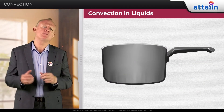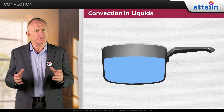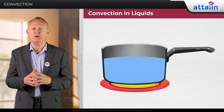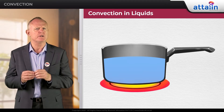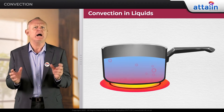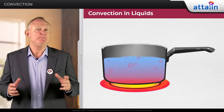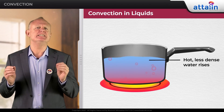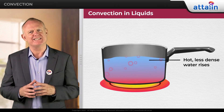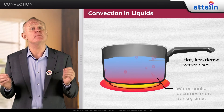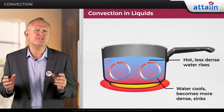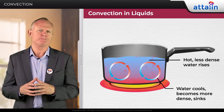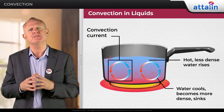Think of a pan filled with water with a heat source at the bottom. As the heat is transferred from the bottom of the pan to the liquid particles, they vibrate, collide, and move further apart. Because of their high kinetic energy, the water moves to the top as its density decreases. Colder, denser water takes up its place at the bottom. This cycle keeps going until all the water is at the same temperature — this is how a convection current is set up.